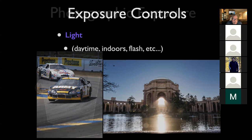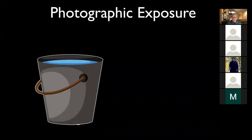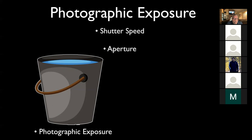When we talk about photographic exposure, think of it in the way of filling a bucket with water. We're going to use shutter speed and aperture. Our goal is to fill this bucket up with water - if we fill it up with too much water, that's too much exposure and that doesn't work for our cameras. If we don't fill it up with enough water, that's not enough exposure and that doesn't work either.